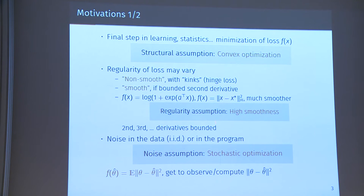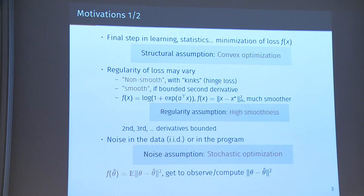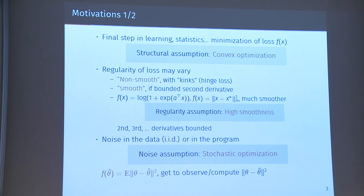All higher derivatives are bounded by zero, and the same is true for logistic regression. We typically aim at optimizing convex functions that are smooth, but we don't use the fact that they are really smooth. The question is: can we use this higher degree of smoothness to improve rates of convergence? And that's the main topic of this talk.